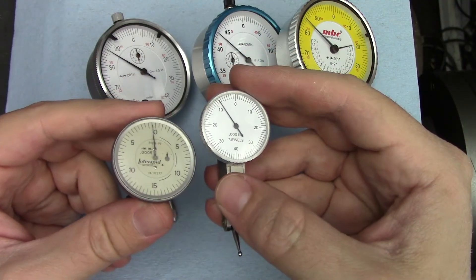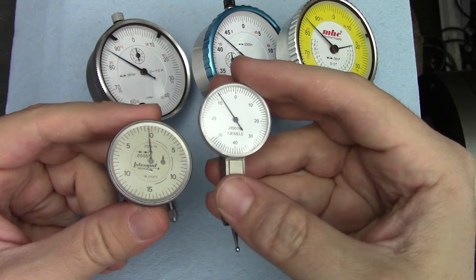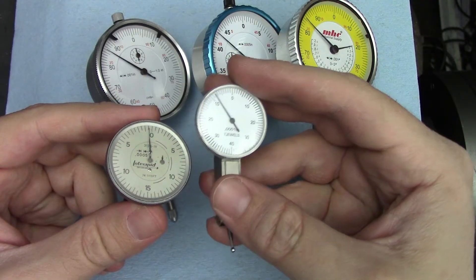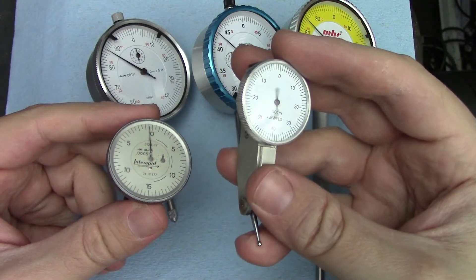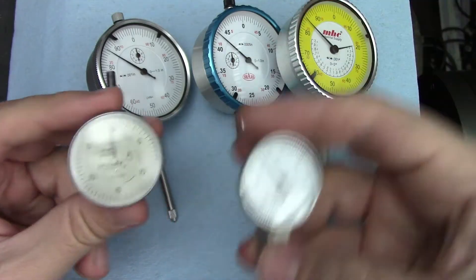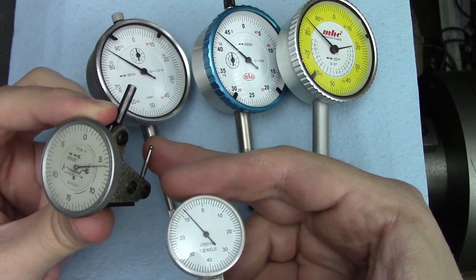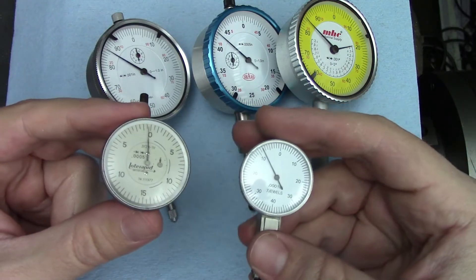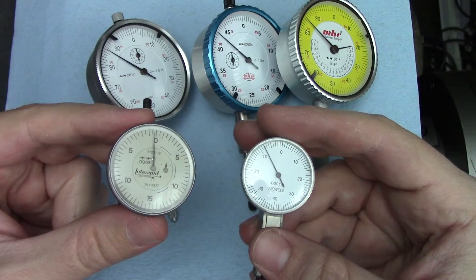Usually, indicators with finer graduations will have shorter ranges of motion, but again, it's hard to make sweeping generalizations here. My tenths indicator only has eight thousandths of travel, whereas my half thousandths interrapid actually has sixty thousandths, double that of most half thousandth dial test indicators.